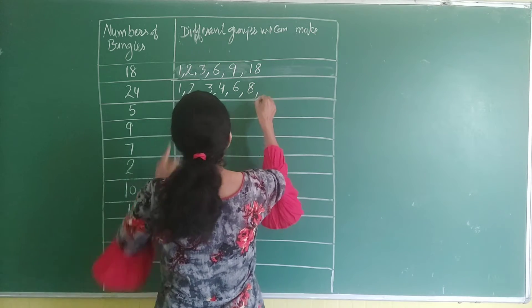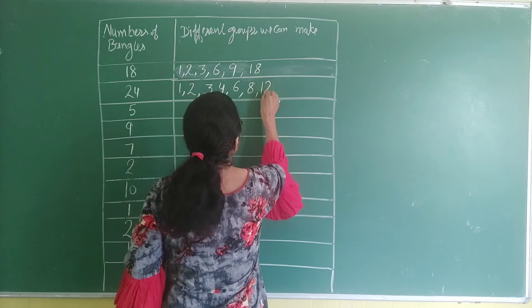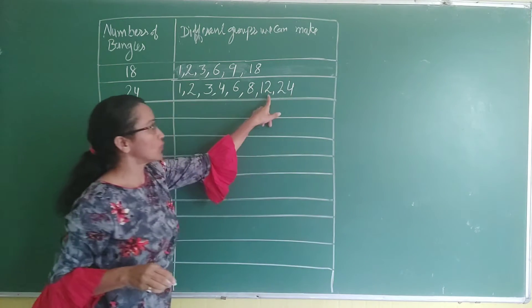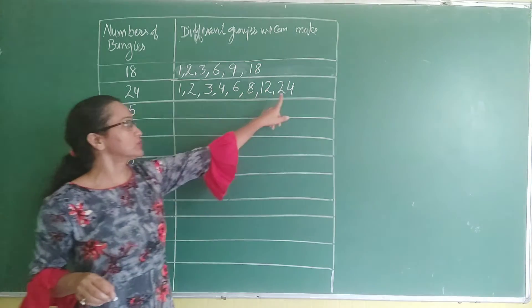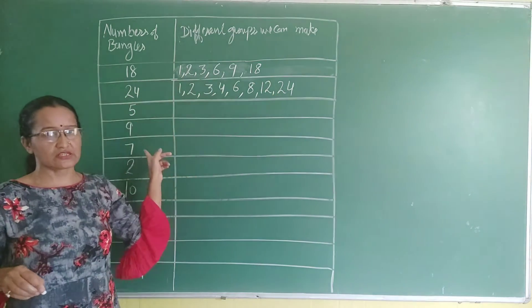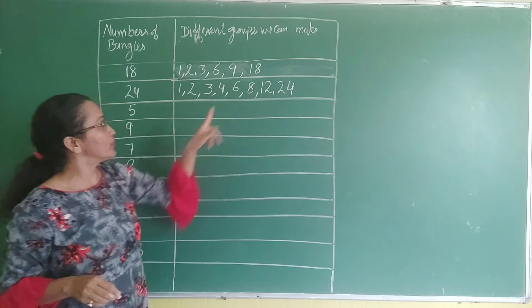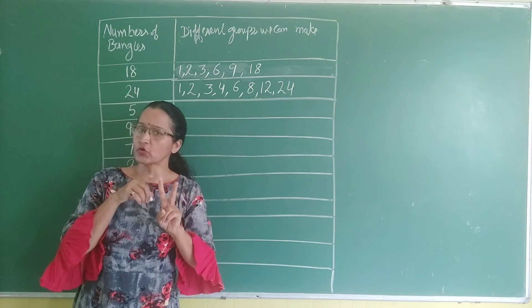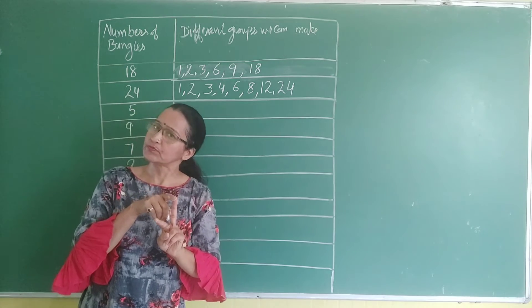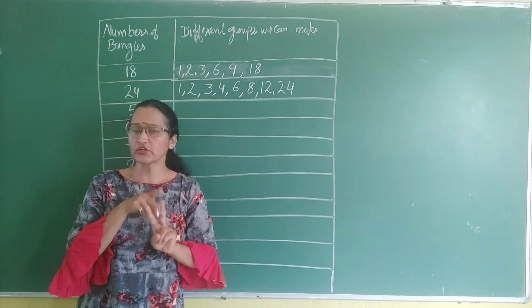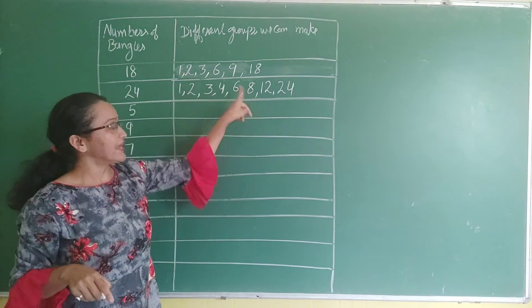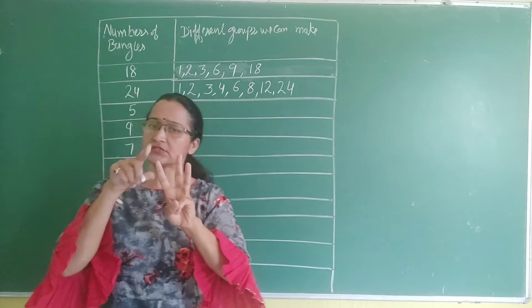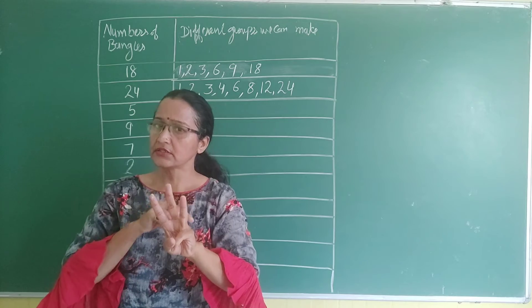Next is 12 and 24. So a group of 12 can be made, and a group of 24 can be made. If you make a group of 12, you get 2 groups — one group of 12 and the second group of 12. If you make a group of 8, you get 3 groups of 8.